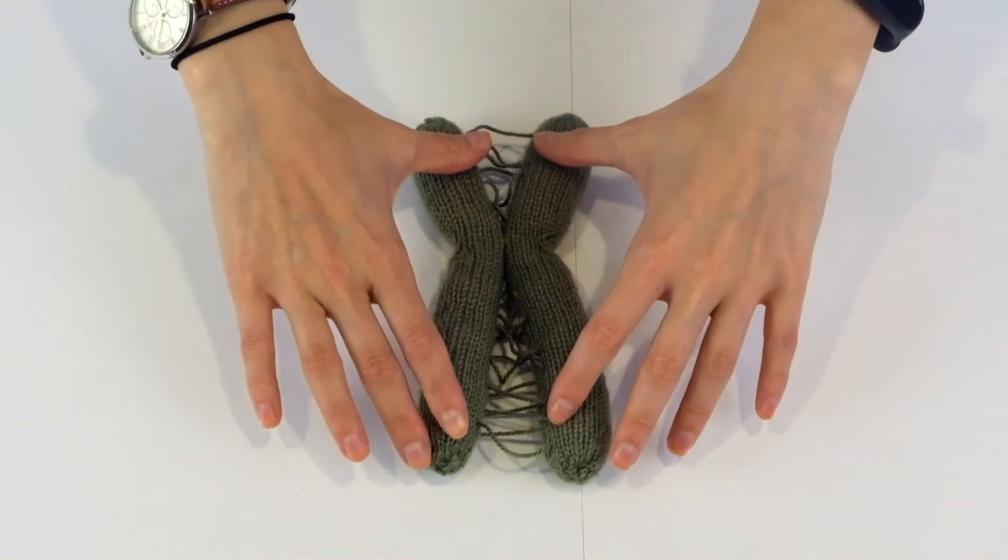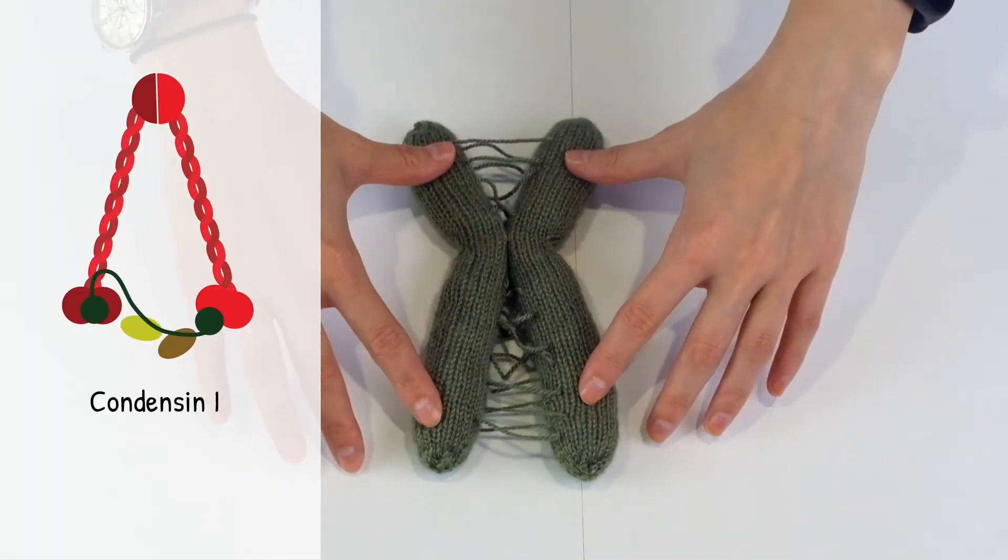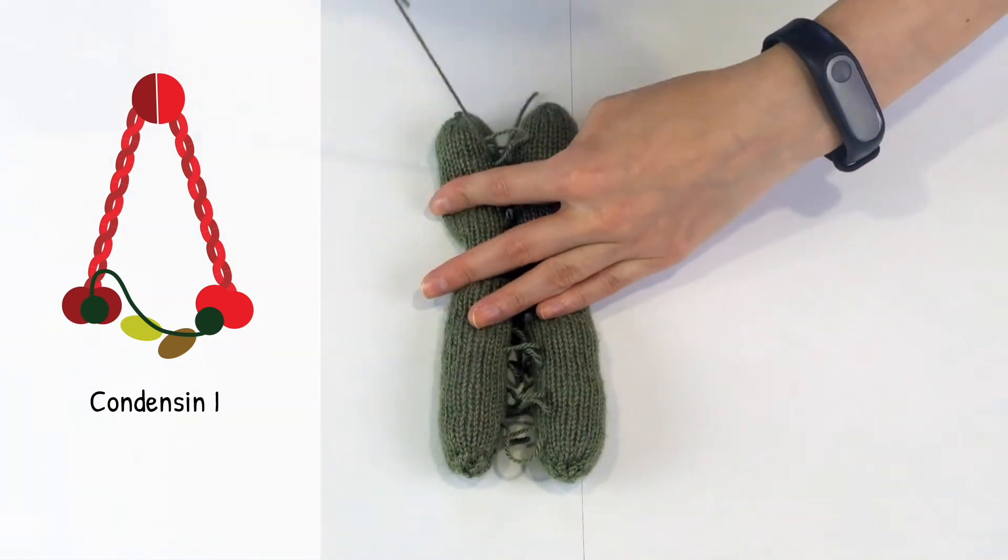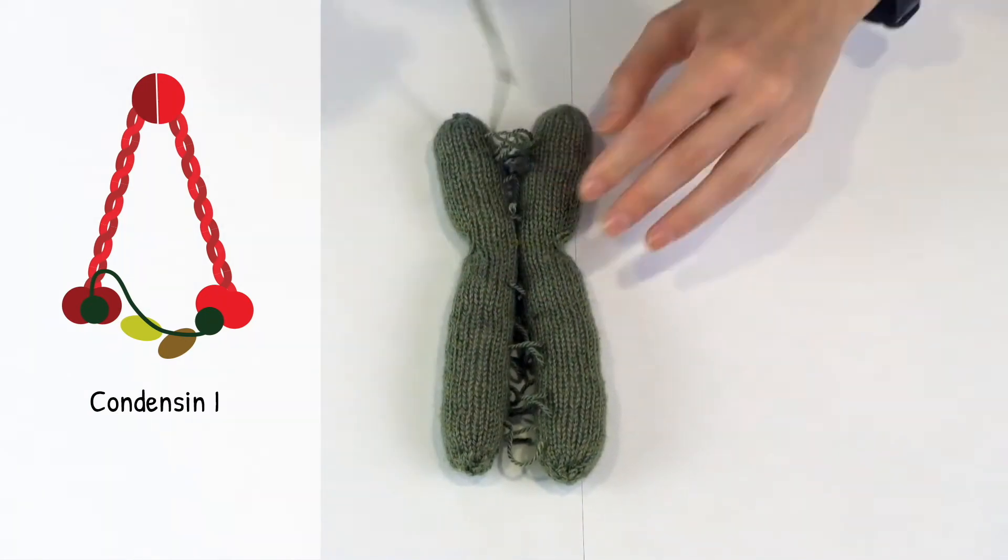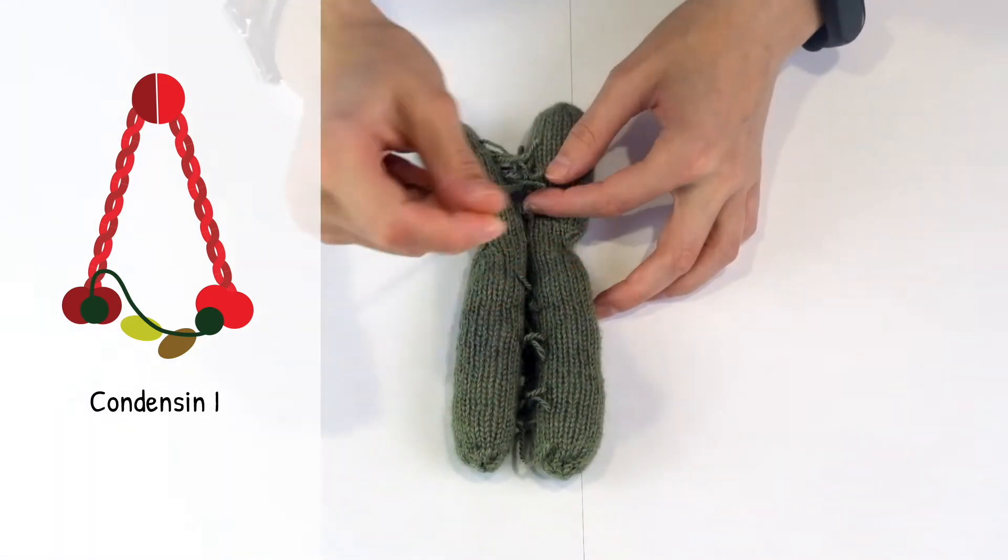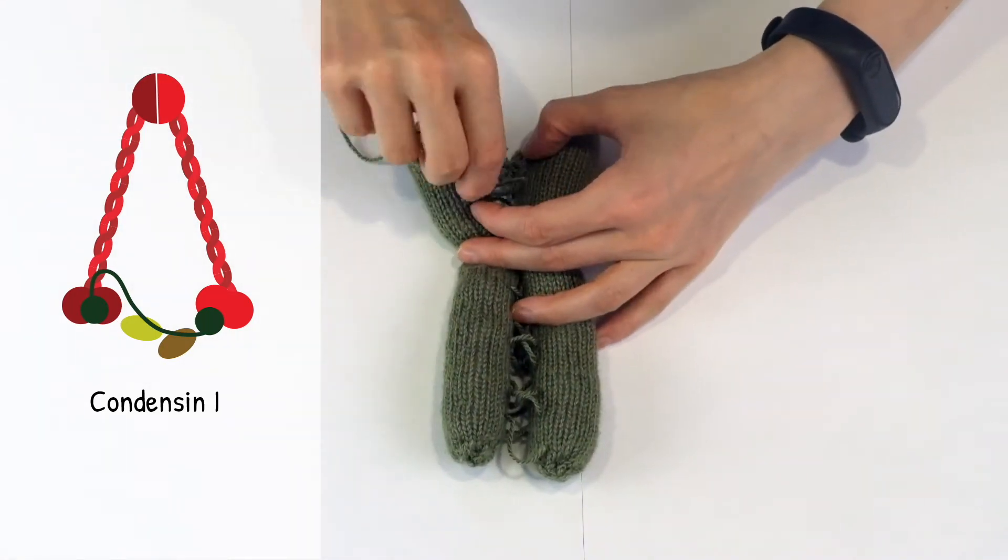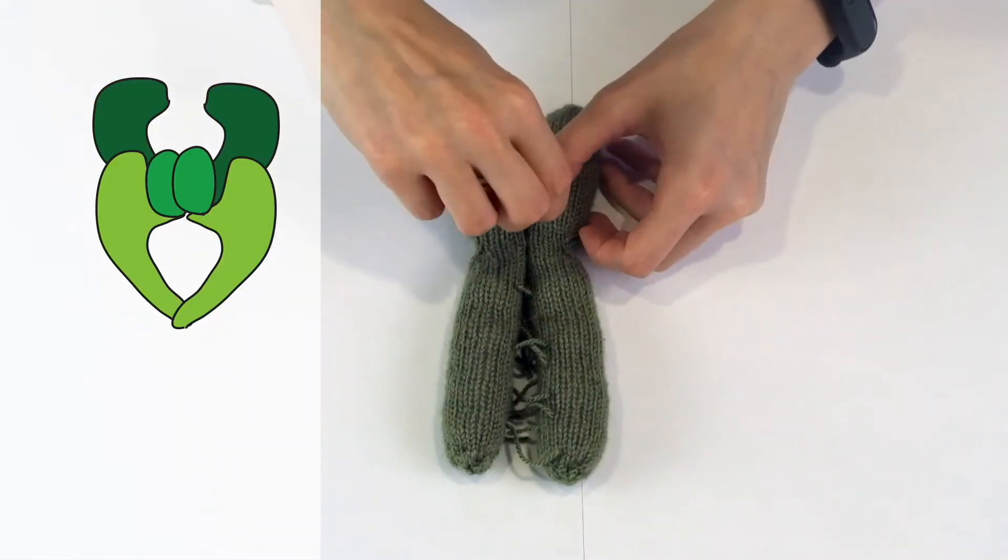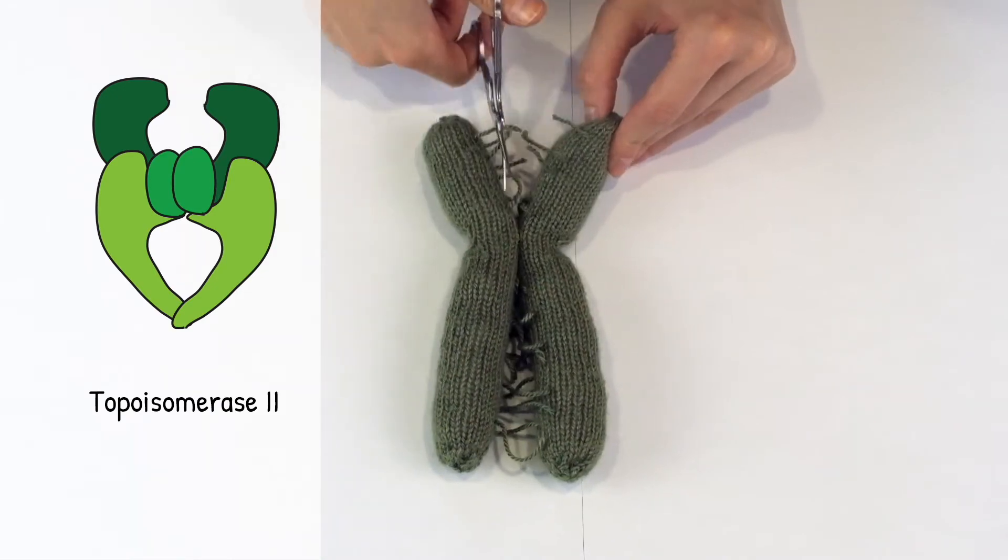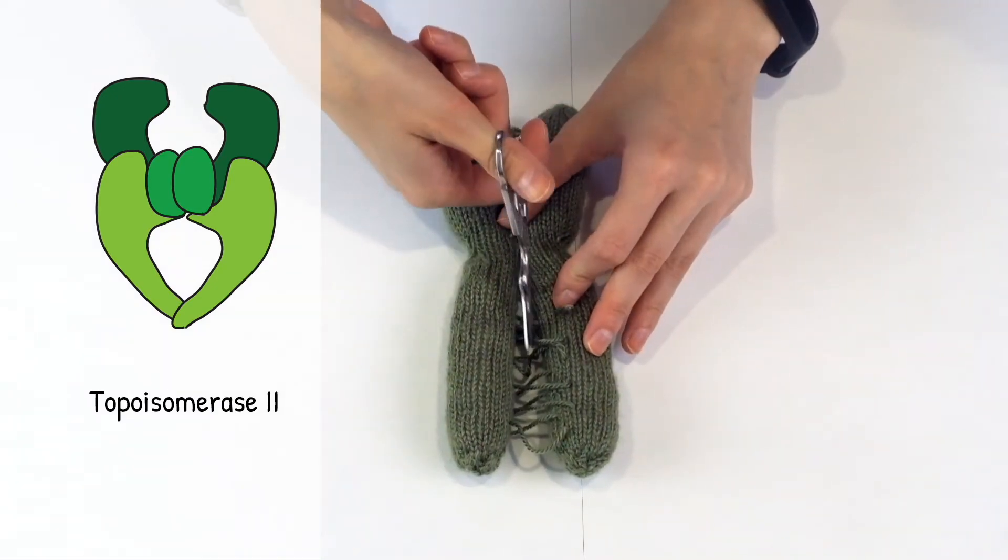The results have shown that the protein named Condensin-1, known to be involved in the assembly of the chromosomes at early mitosis, is strictly necessary for maintaining the chromosomal structure, and does so in close cooperation with the molecule that resolves DNA entanglements, named topoisomerase-2.